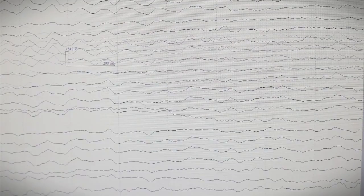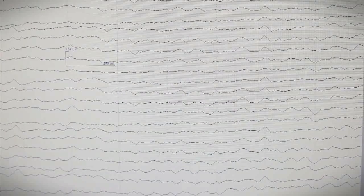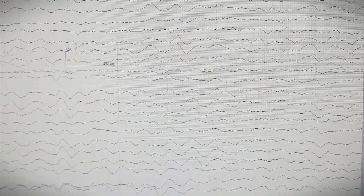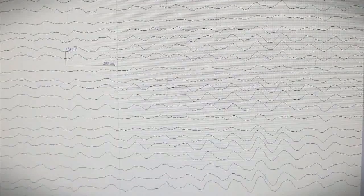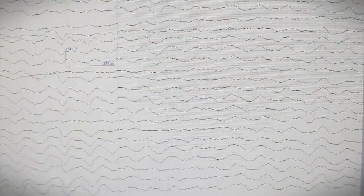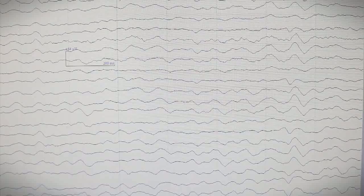Let's have a look at what happens when our test subject closes their eyes. You can see that the signal changes with the eyes closed. It actually slows down, particularly towards the back of their head where most of the visual processing takes place. There's less peaks and troughs per second, and the activity actually becomes more rhythmic.